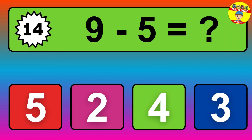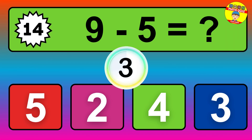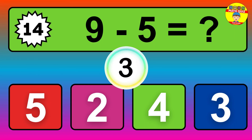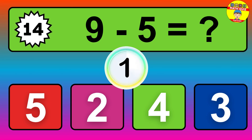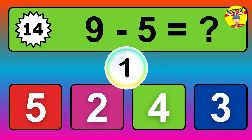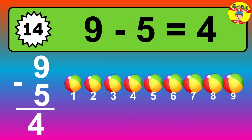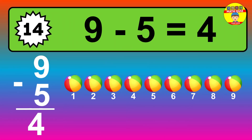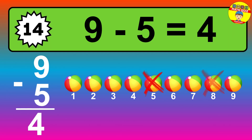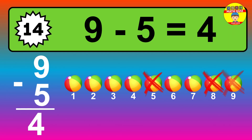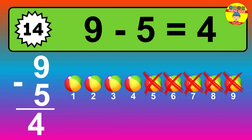Question fourteen: nine minus five equals what? So the answer is nine minus five is four. Let's count it: one, two, three, four.